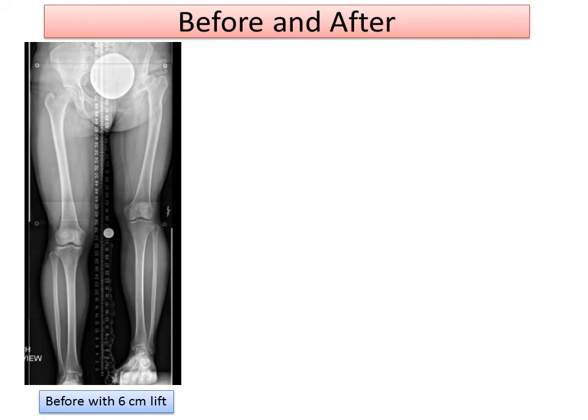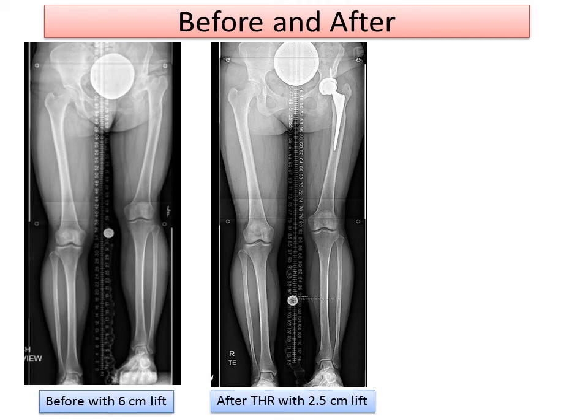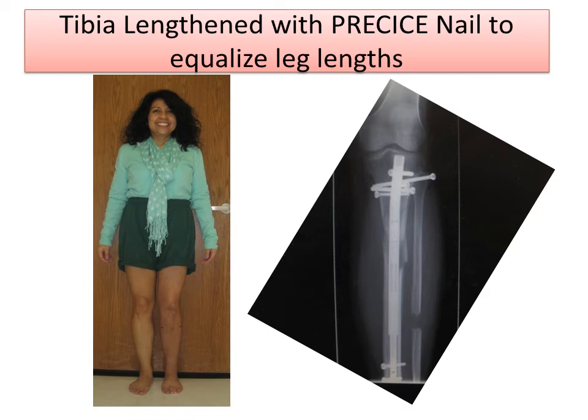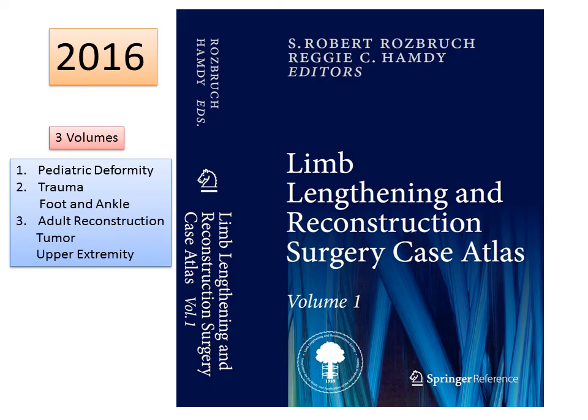I want to show you the timeline and how we approach this. Before surgery, she has 6 centimeters of leg length discrepancy. After the total hip replacement, the discrepancy has been decreased to 2.5 centimeters. And after a lengthening of the tibia, she has full equalization of her leg length. The strategy was that after total hip replacement, the residual discrepancy was treated by lengthening the tibia with a precise nail to equalize her leg length. The patient gave permission to show her images.